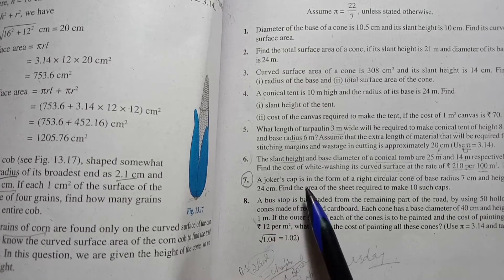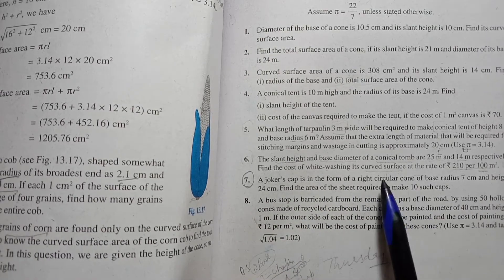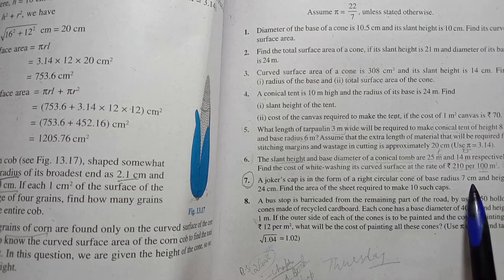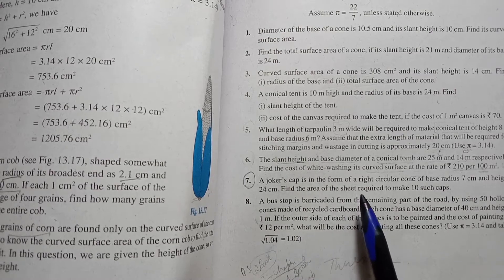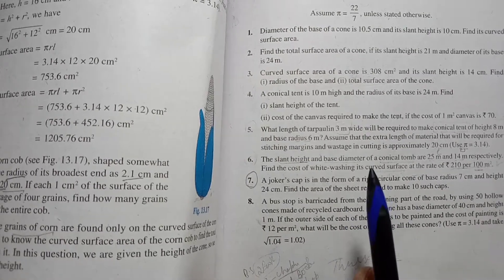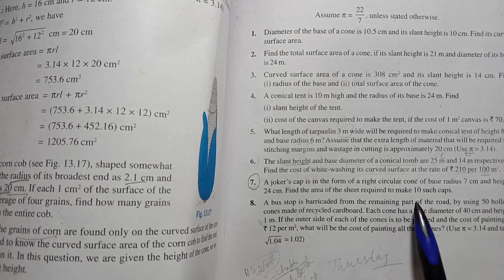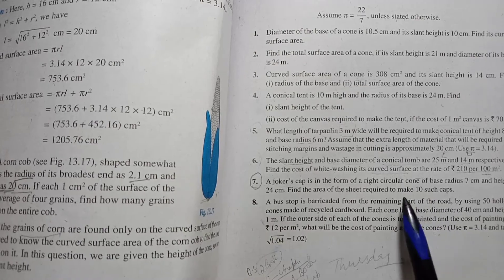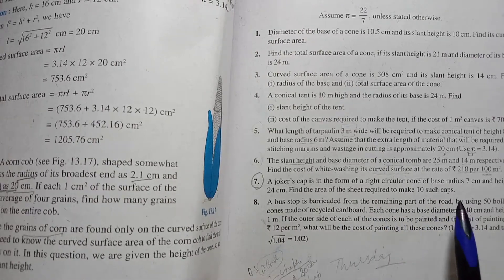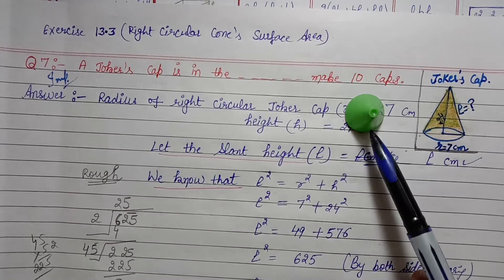Simple question: the joker's cap is in the shape of a right circular cone with radius 7 cm and height 24 cm. They have asked how much sheet is required to make that joker's cap. We have to make 10 such caps, so we need to find the area of sheet required for 10 caps.